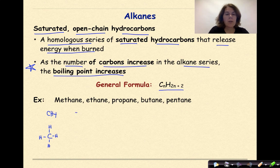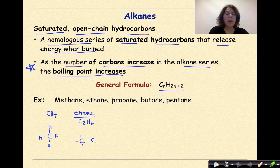Now let's do ethane. The chemical formula for ethane is C2H6. 'Eth' means two carbons, and -ANE means a single bond between the two carbons. We know each carbon can have four bonds in order to have its full octet, and because this is composed only of carbons and hydrogens, everything else around these carbons must be hydrogen.